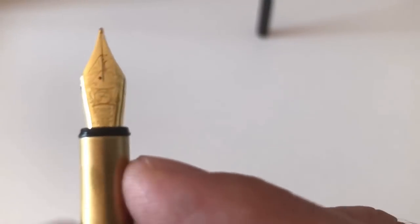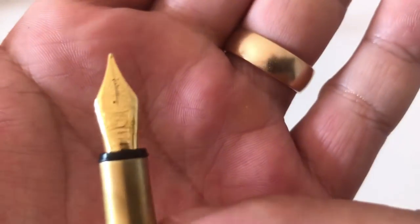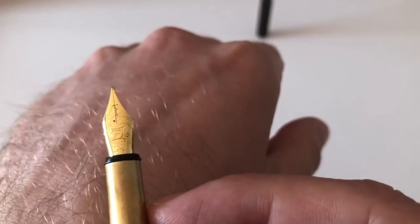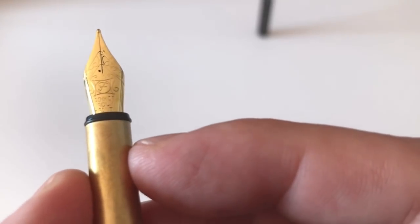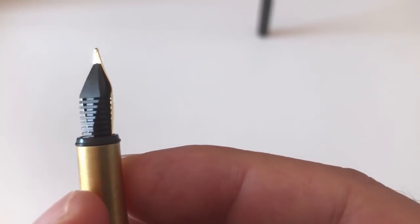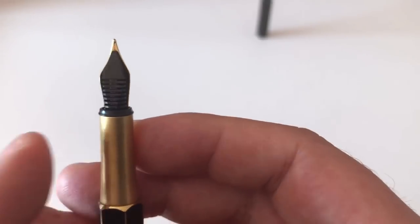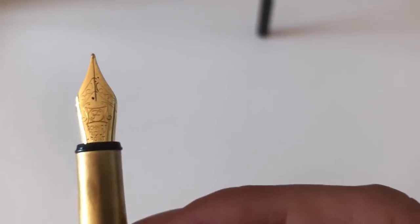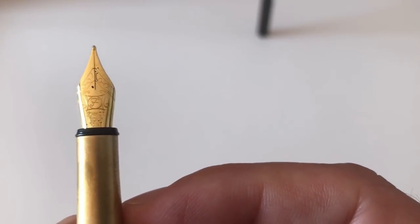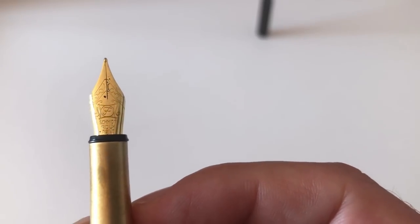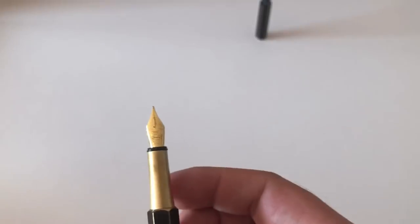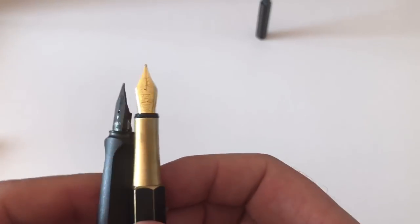The nib—really beautiful gold-plated steel nib saying F for fine, Schmidt iridium point. It's a true fine nib, and it writes utterly smoothly. It's a really, really nice, really smooth writing nib. Some beautiful scroll work on there. No breather hole that we can see. It's a number five size nib.